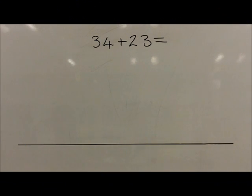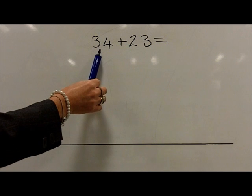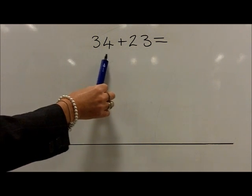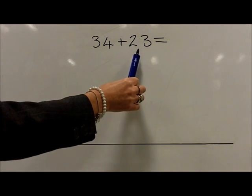When children are confident and competent with numbered number lines, they will begin to use the empty number line. Starting with the larger number and counting on by partitioning the second number.